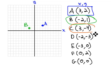C is at 3, negative 4. Always going to the right first, 3, and then up negative 4. Up negative means we're actually moving down, 1, 2, 3, 4 points, to get to point C.